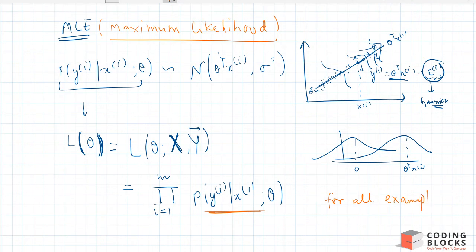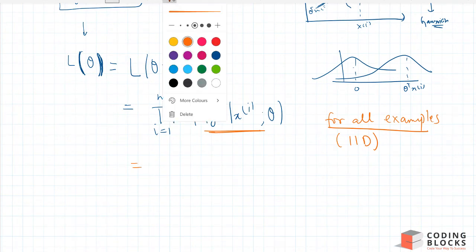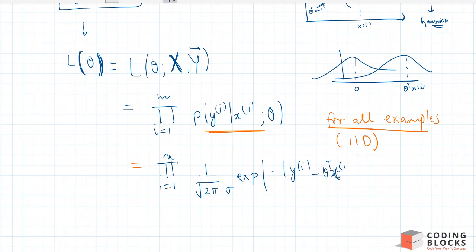We use multiplication because we assume iid — the noise added to our examples is independently distributed, so all the probabilities can be multiplied. This product is the product from i equals 1 to m of the Gaussian noise formula: 1 over root(2π·σ) times e to the power of minus (yi minus theta transpose xi) squared divided by 2 sigma squared.